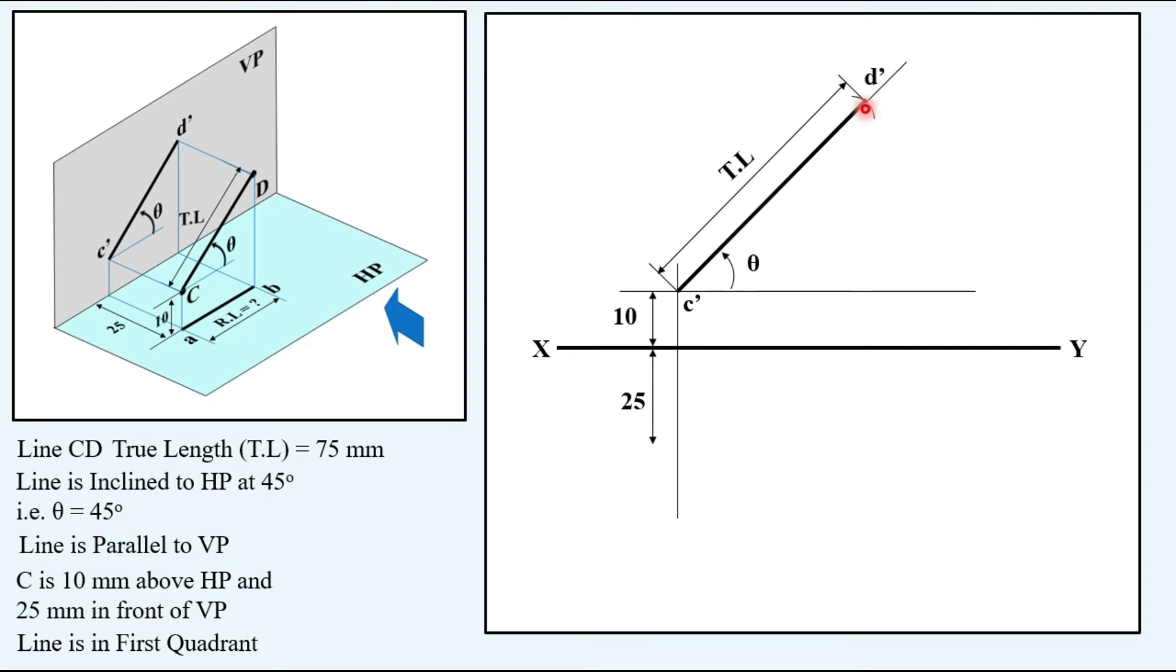Then the top view point of C is 25 mm in front of VP. So as per first quadrant, the top view will be below XY line at a distance of 25 mm. Drawing another vertical projector from D dash because the corresponding top view point will be in the same vertical line. So the intersection of this vertical projector and this horizontal line is this.